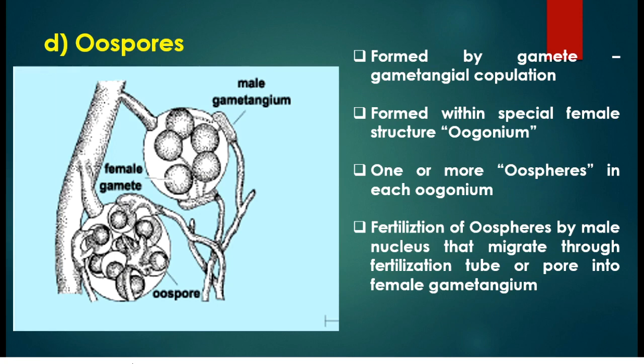Fertilization takes place when the male nucleus migrates through the fertilization tube or fertilization pore into the female oogonium. The oospheres get fertilized and give rise to the sexual spores known as oospores. An example is Saprolegnia.